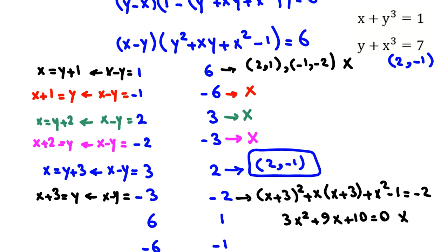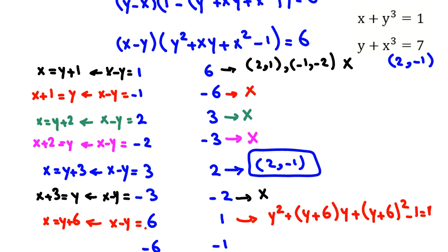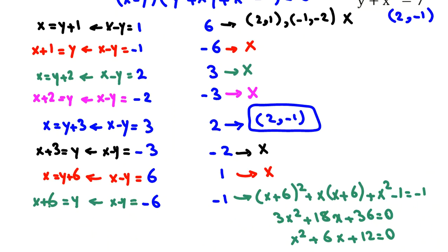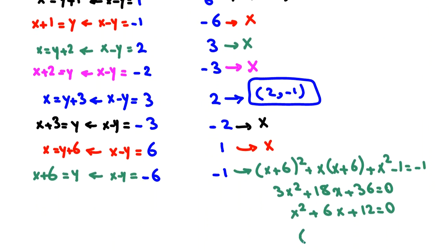For x minus y equals 6: replacing x with y plus 6 gives 3y squared plus 18y plus 34 equals 0. The remainder of the left-hand side when divided by 3 is 1, but the right side is 0 — contradiction. For x minus y equals −6: replacing y with x plus 6 gives x squared plus 6x plus 12, which is (x+3) squared plus 3 equals 0 — impossible since the left side is positive.